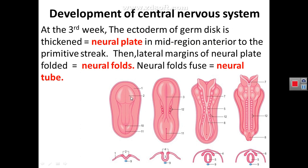After this thickening of the neural plate, the ectoderm will start to fold, forming the neural folds. These neural folds will increase to be closed, forming the neural tube. So we have a thickening of the midline ectoderm forming a neural plate, which is folded forming a neural fold, and then the folds close to form the neural tube.